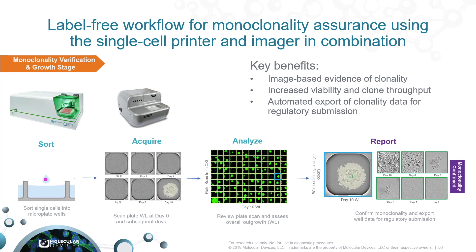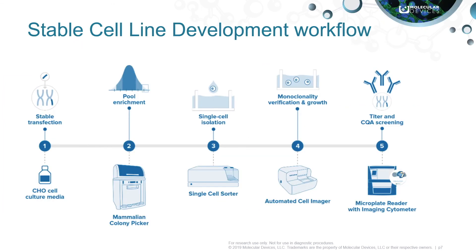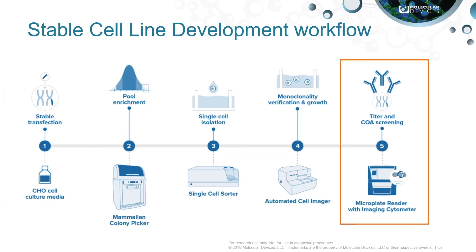Once they have completed growth, users can confirm monoclonality using a reporting feature for regulatory submission. During the final step in the process, cells are analyzed for titer and critical quality attributes. This is a test that detects the amount of recombinant protein or antibodies produced from the colony derived cell line, and can be performed on Molecular Devices' best-in-class SpectraMax i-Series multi-mode plate readers.